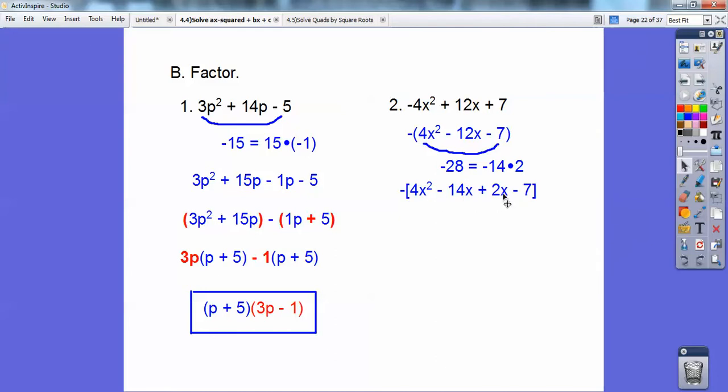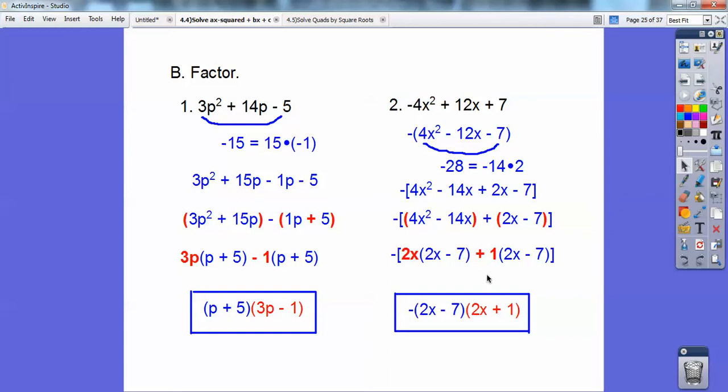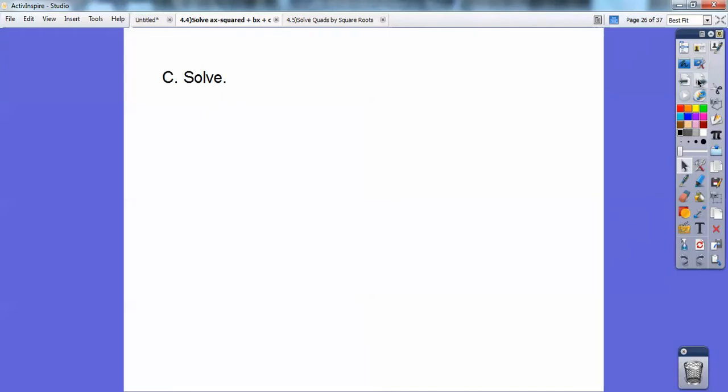Then I'm going to group the first two together, group the second two together. Looks like I can only pull another one out of the second two. Out of the first two, I can pull a 2x out, right? Okay, and out of these guys, I can only pull a 1. So when I pull a 2x out, 2x out of that, I'm left with 2x, 2x out of that, and left with 7. Now they both have the common blue 2x - 7. So I'll pull that out. And don't forget the negative that's out there. And I'm left with the red stuff, 2x + 1. Every time it works that way, you guys.